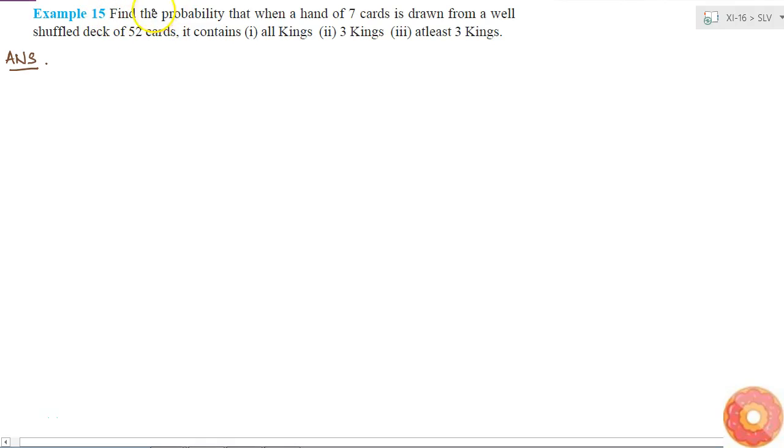In this question, a hand of 7 cards is drawn from a well shuffled deck of 52 cards. From out of 52 cards, I took out 7 cards at random. I need to find the probability that it contains, the first part is all kings.